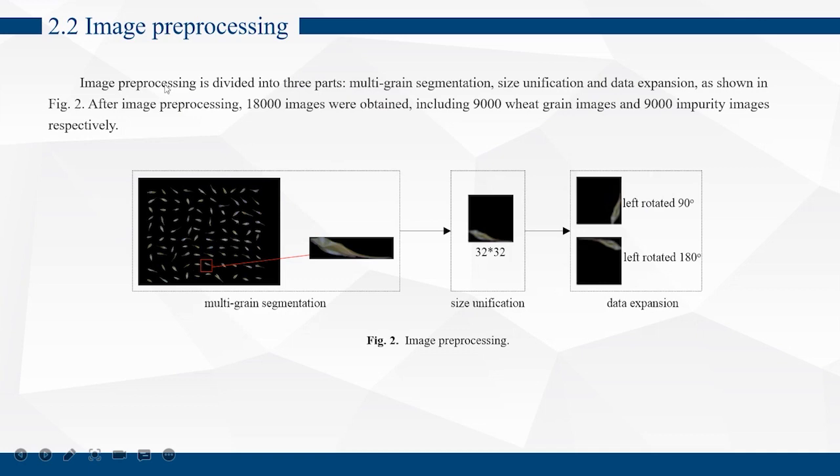Wheat grains and impurities were collected 3,000 grains respectively. Image processing is divided into three parts: multi-grains segmentation, size unification, and data expansion. After image processing, 18,000 images were obtained, including 9,000 wheat grains and 9,000 impurity images respectively.